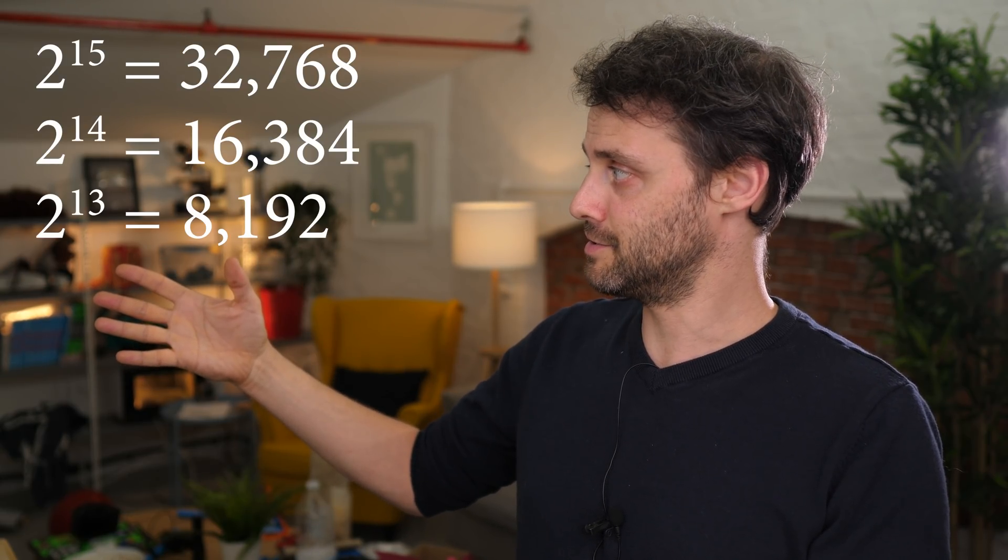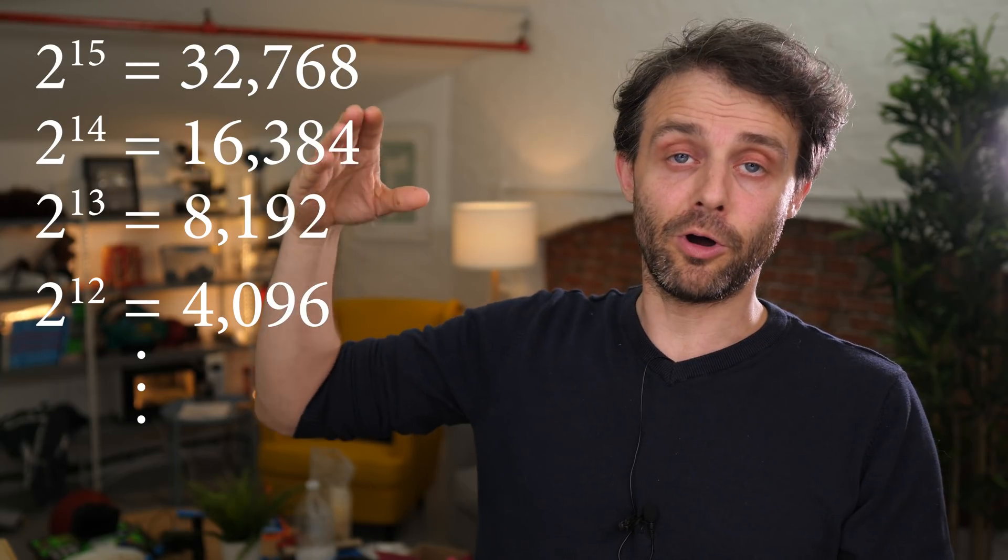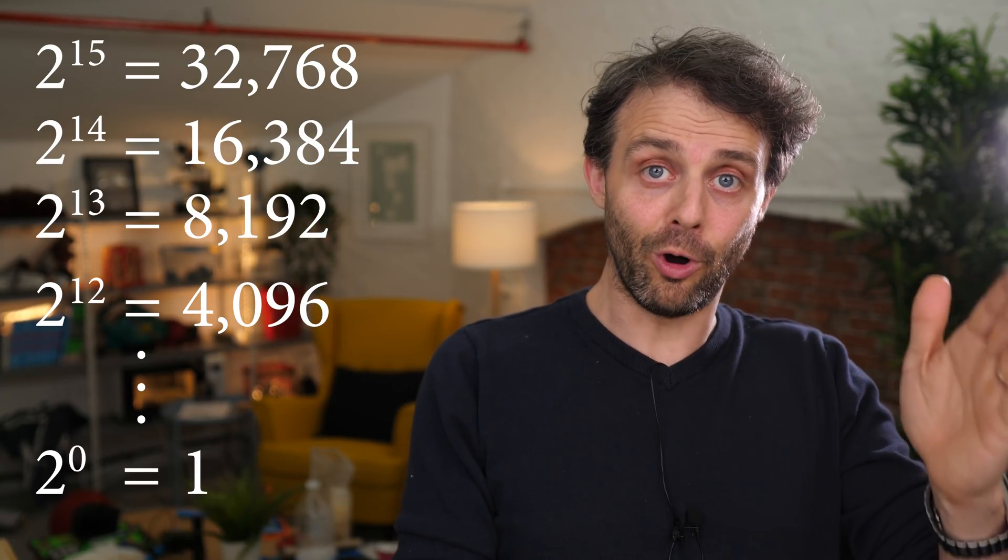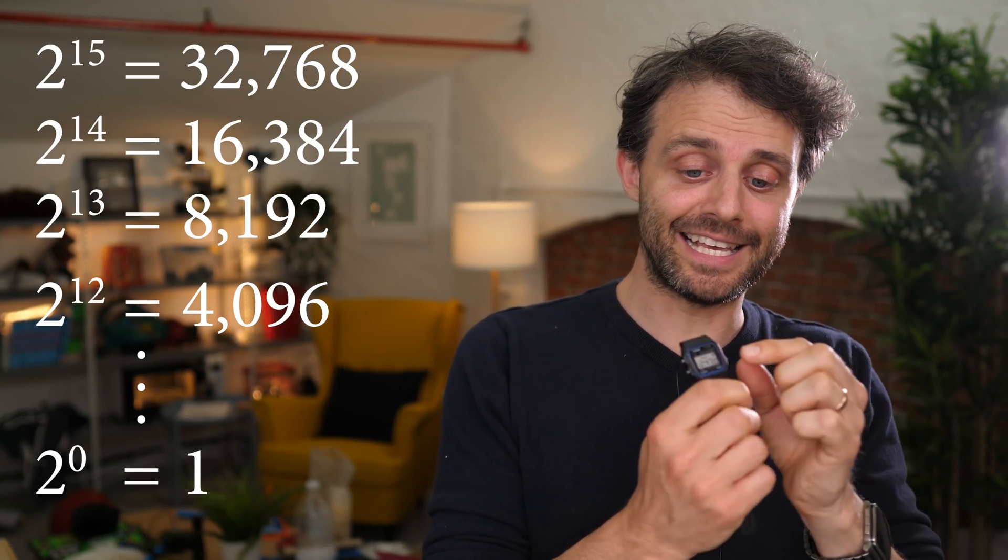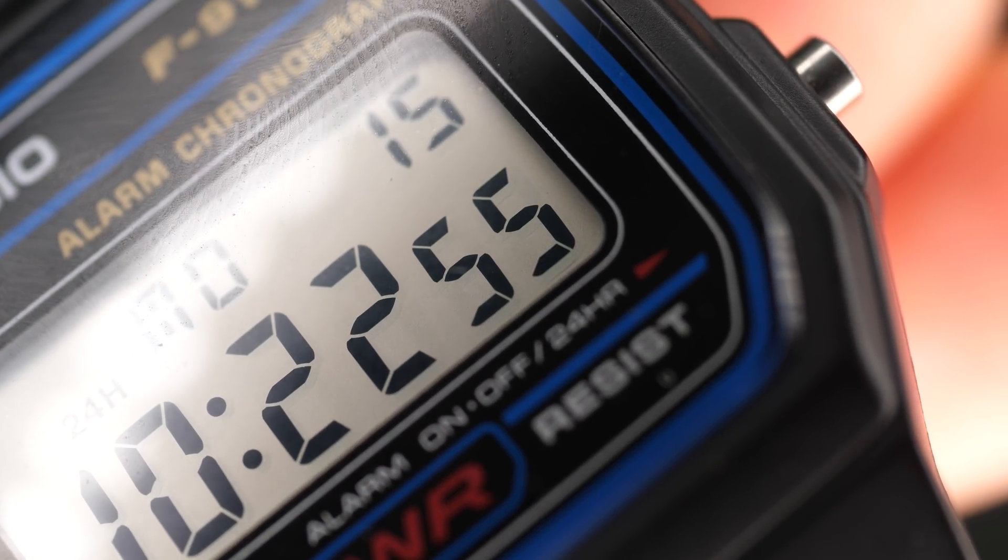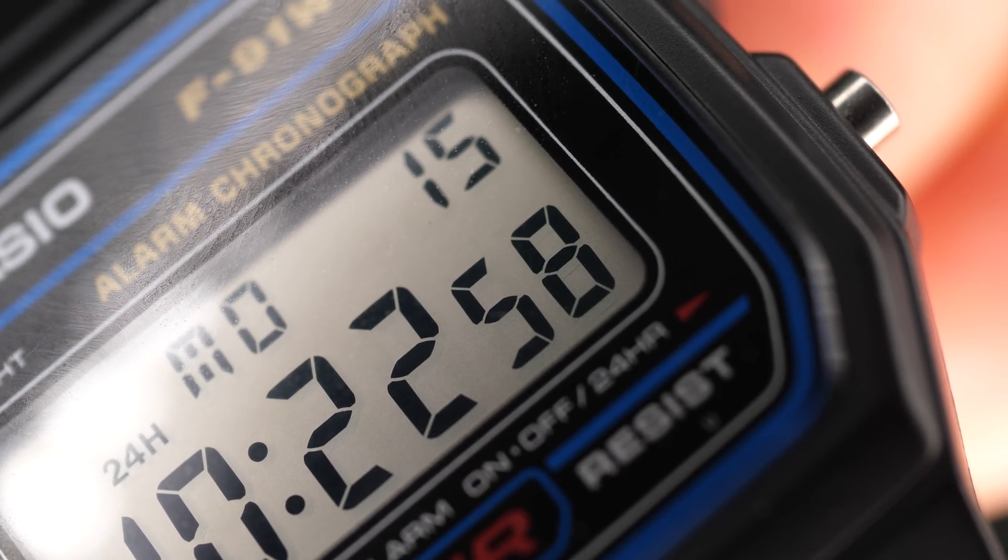So you halve 32,768 to 16,384 and then halve it again to 8,192 and so on all the way down to 1 Hertz. And it's that signal that drives the changing of the second display or the ticking of the second hand if it's analog.